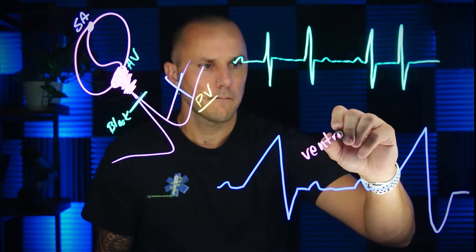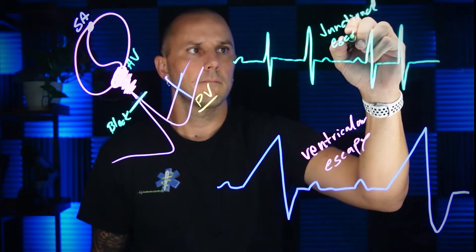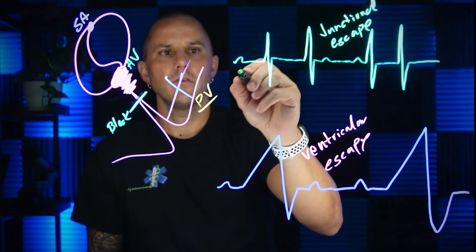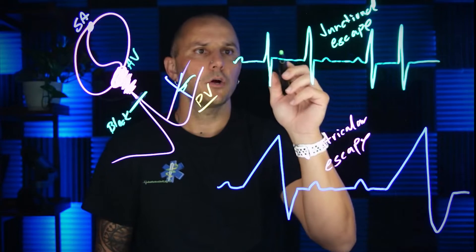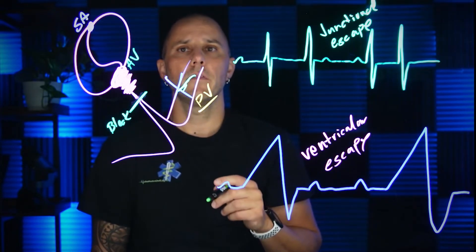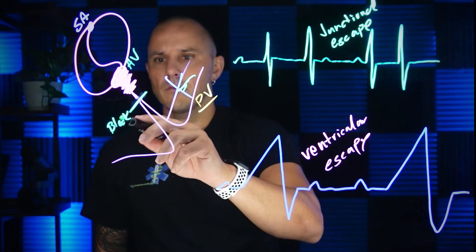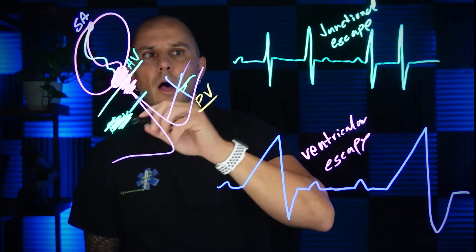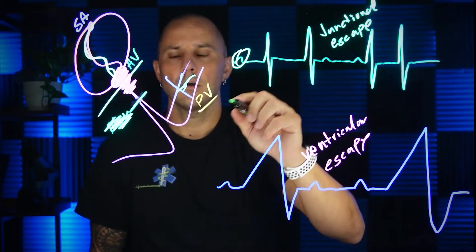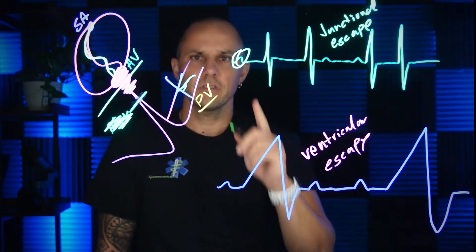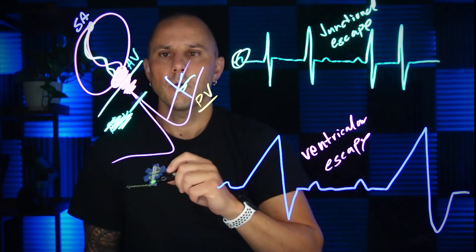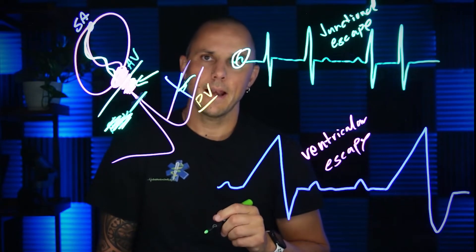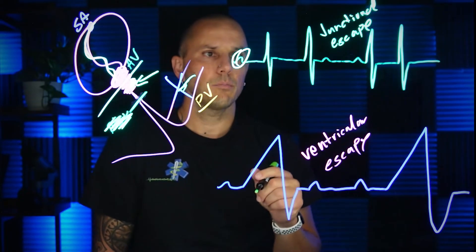Down here we have a ventricular escape, and up here we have a junctional escape. Why is that important? Because this person who has this junctional escape rhythm — the pacemaker is not originating in the Purkinje fibers. It must be originating up in that AV node or maybe even in the superior portion of the bundle of His. So instead of the block being lower, the block could be right here — higher up. We could still see P waves coming from the SA node that don't make it through, but since the block is high enough up in the conduction system, we can still have some inherent cells with enough automaticity right in the AV node that they fire from that area, giving you a narrow complex junctional escape-looking rhythm in the background.